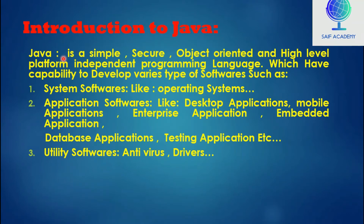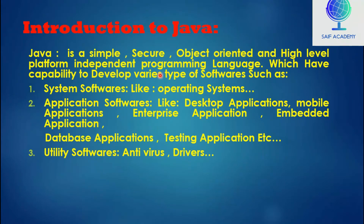Java is a simple, secure, object-oriented, and high-level, platform-independent programming language. It is a secure, object-oriented, high-level, platform-independent programming language.